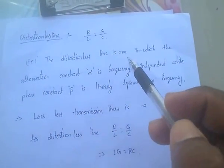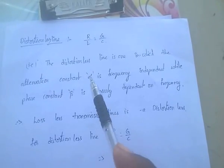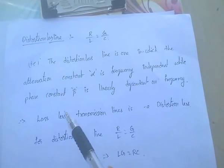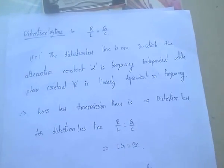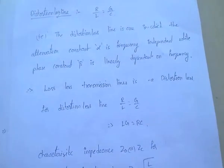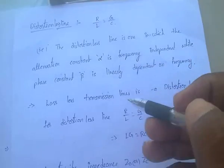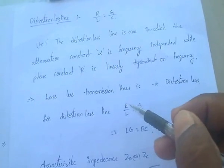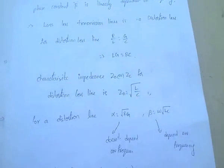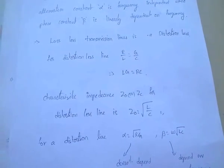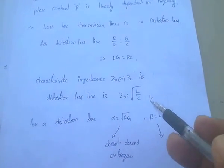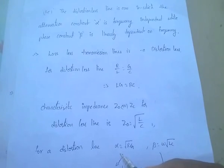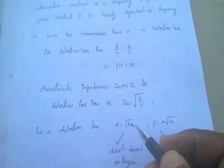The distortion-less line is one in which the attenuation constant is frequency-independent — it does not depend on frequency — while phase constant beta is linearly dependent on frequency. The condition for this distortion-less line is R/L = G/C, or equivalently LG = RC. The characteristic impedance Z0 equals root of L by C, and the attenuation constant alpha equals root of RG.